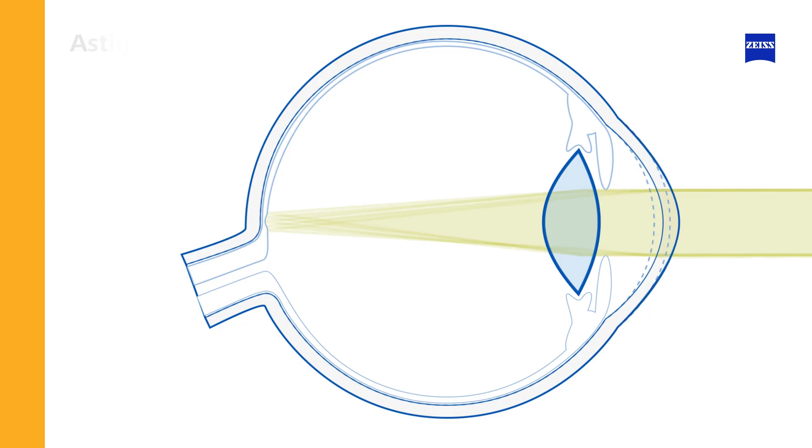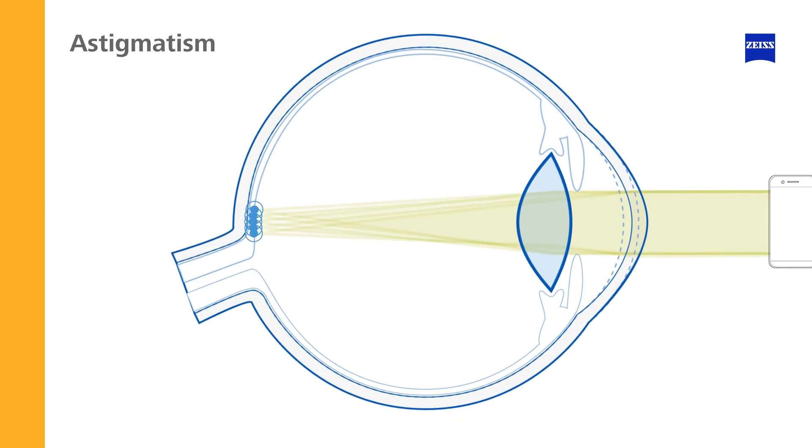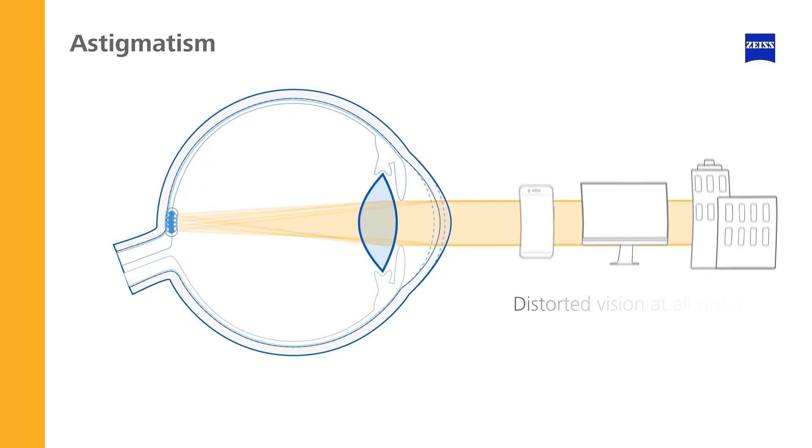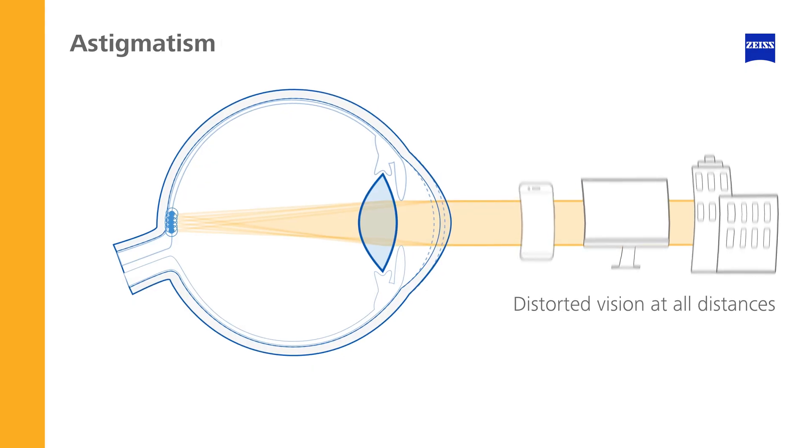If the shape of the cornea, the front part of the eye, is irregular, the light rays are focused on different points of the retina, causing vision to be distorted at all distances. This condition is called astigmatism.